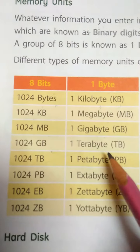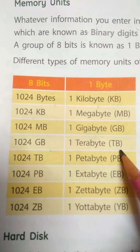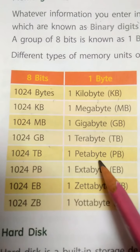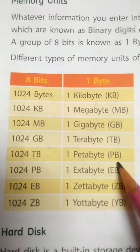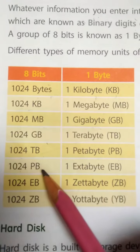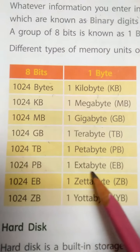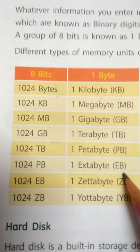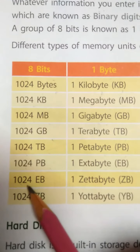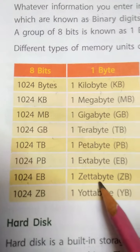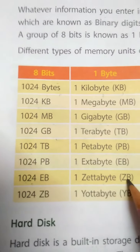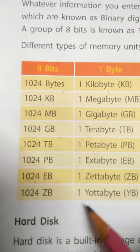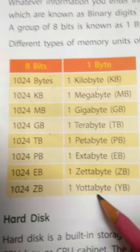1000 GB is equal to one terabyte (TB). 1000 TB is equal to one petabyte (PB). 1024 PB is equal to one exabyte (EB). 1024 EB is equal to one zettabyte (ZB). 1024 ZB is equal to one zettabyte.